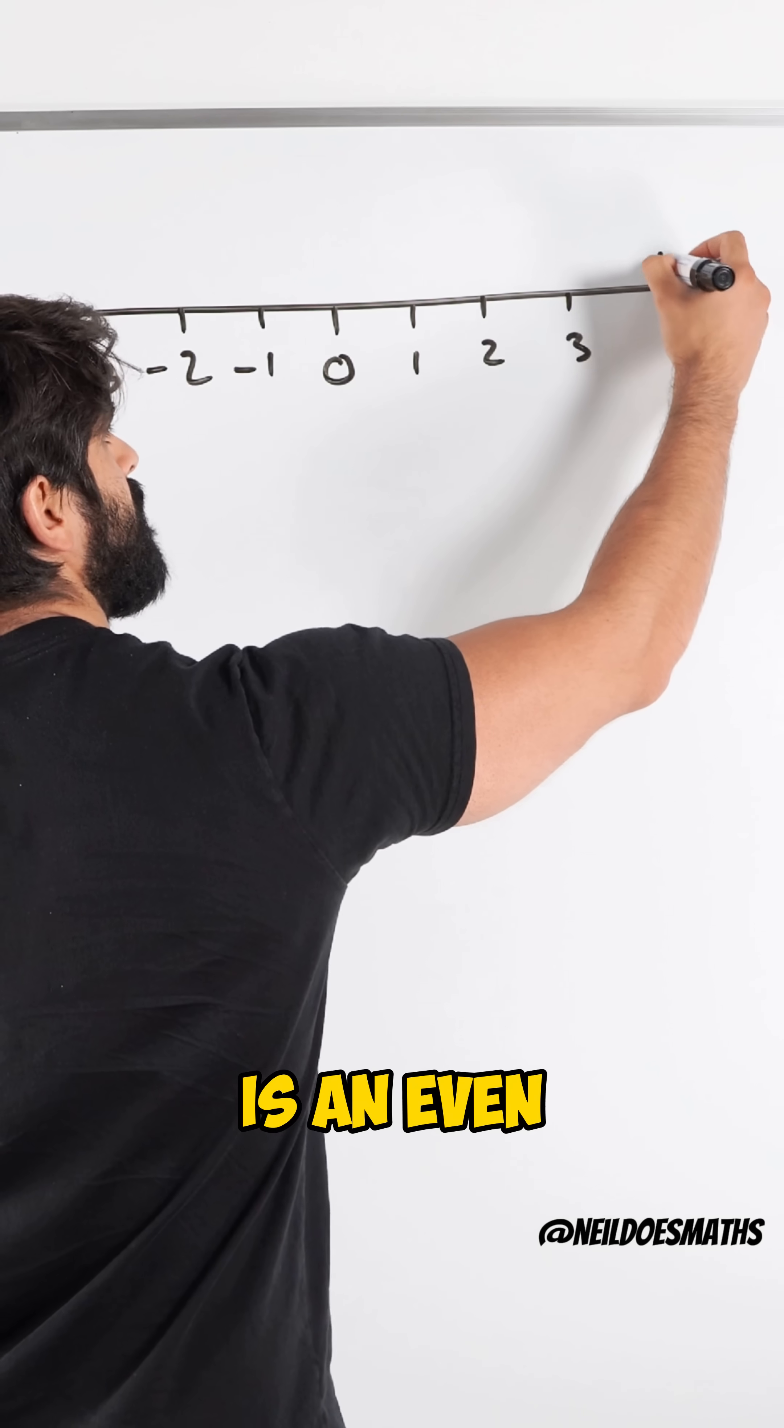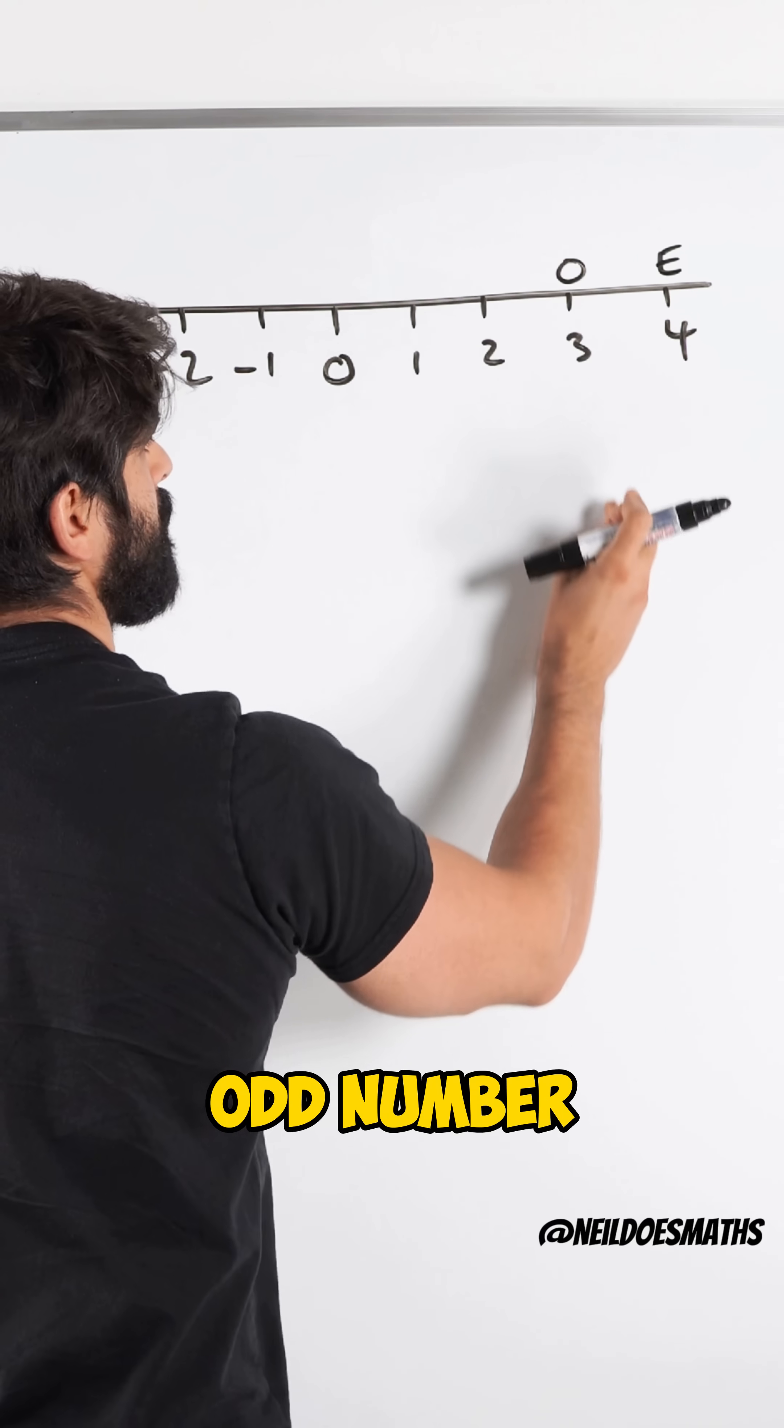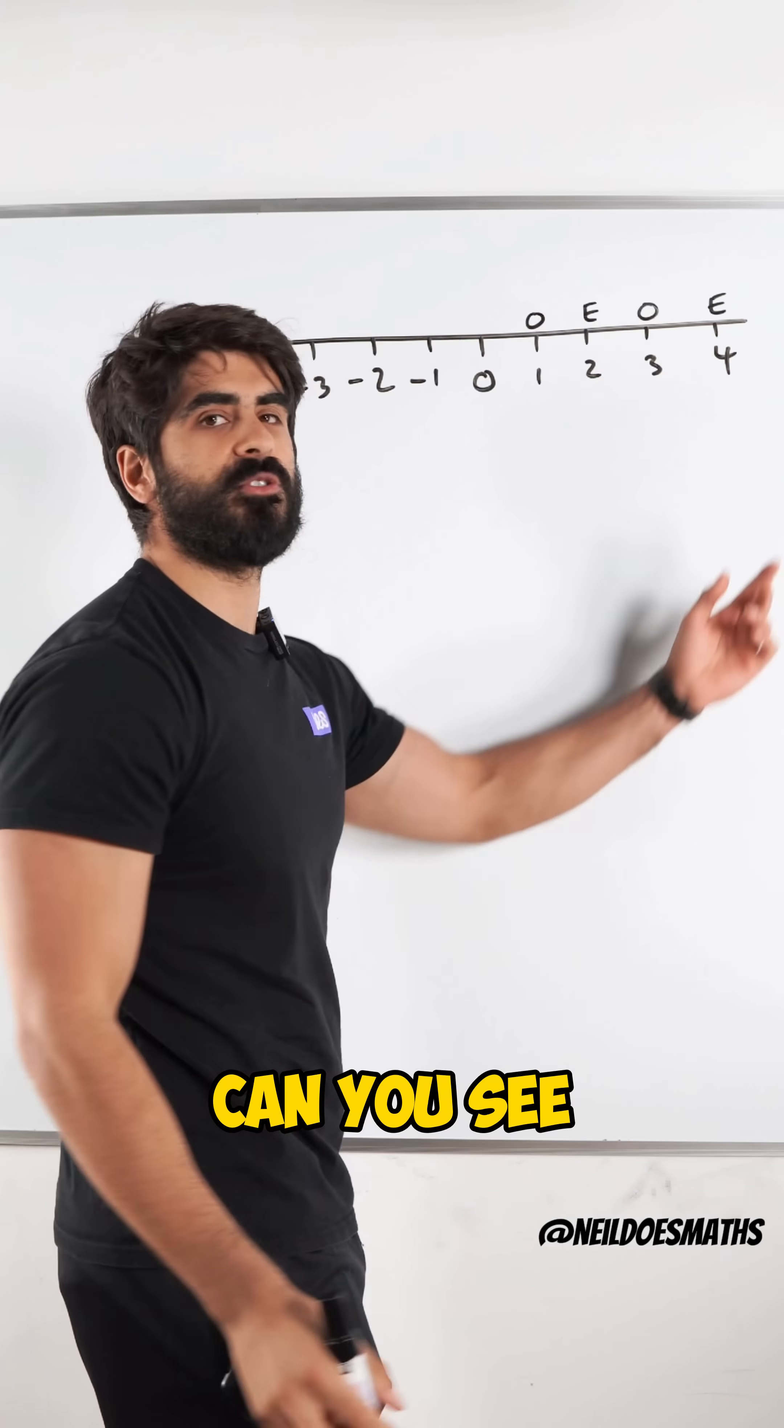Well, we know four is an even number because it's a multiple of two. Three is an odd number because it's an even number plus one. Two is even, one is odd. Can you see the pattern?